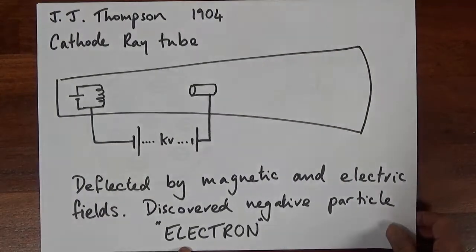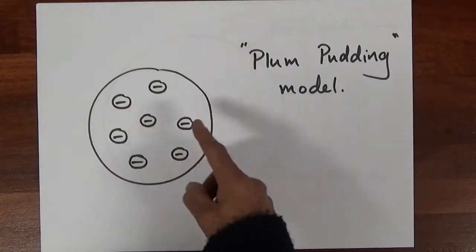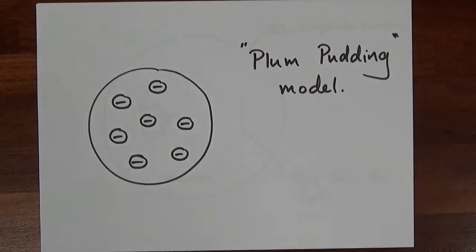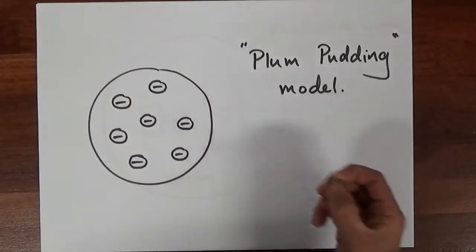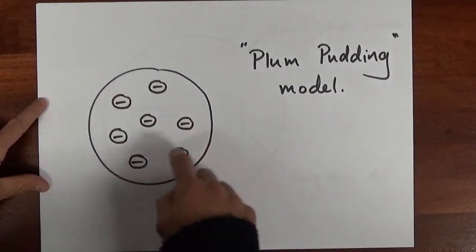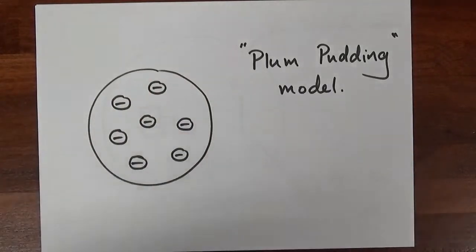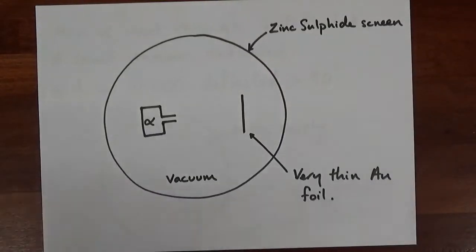JJ Thompson realized that there's more to these atoms than just these things - he realized they had to consist of subatomic particles including the electrons. As a result, he thought about what the atom looks like and came up with the plum pudding model. He figured there must be negative electrons in there, and therefore there must be positive stuff around it. So you can visualize the plum pudding model as negative electrons surrounded by this sort of sea of positive charge, and that was really how it stood for some time, a few years really.